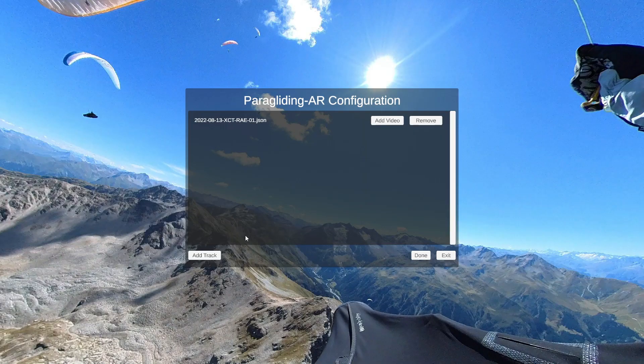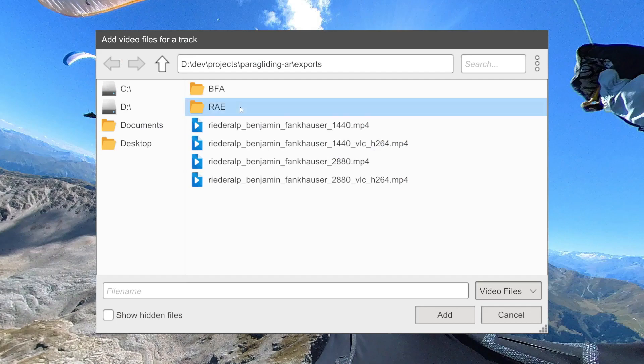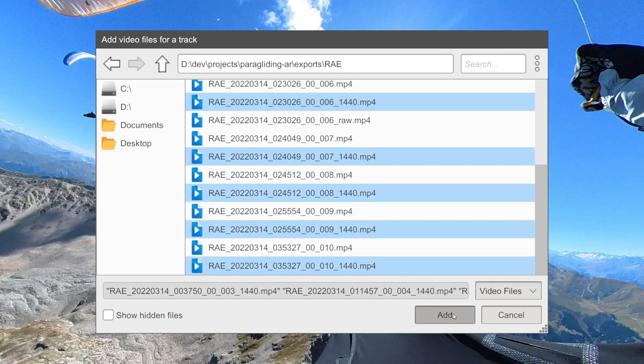The converted tracks are selected in the application and videos are added. Green marks on the player bar indicate where the videos during the flight are recorded.